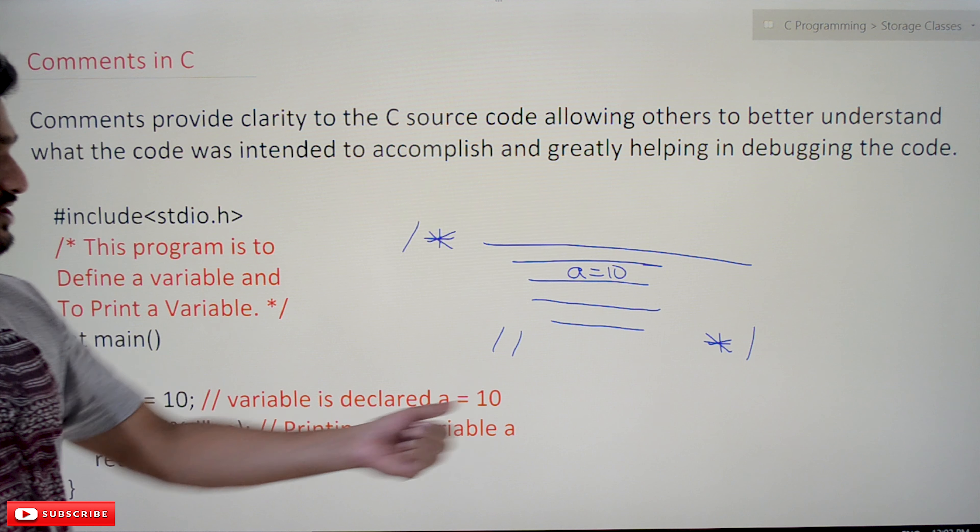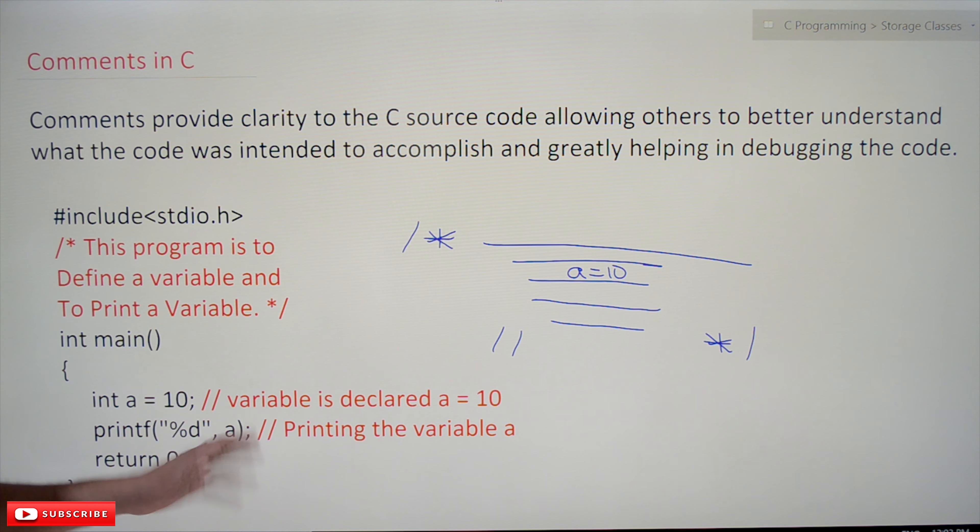...'a = 10', so for understanding I have given printing the variable 'a', and this comment is stating that the program is to define a variable and print a variable. Because it is a bigger comment...